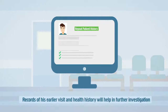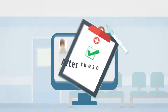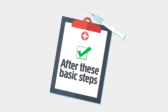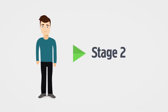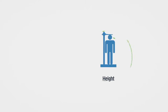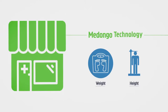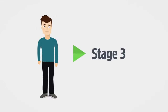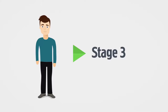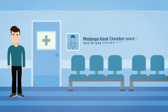For repeat patients, records of earlier visits are also available on the system. The patient then proceeds to stage two, where their height and weight are recorded.